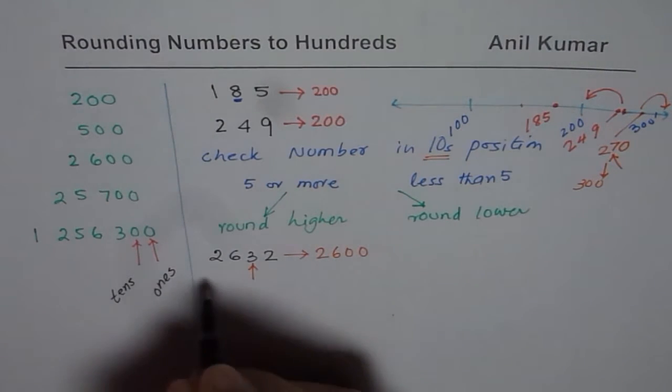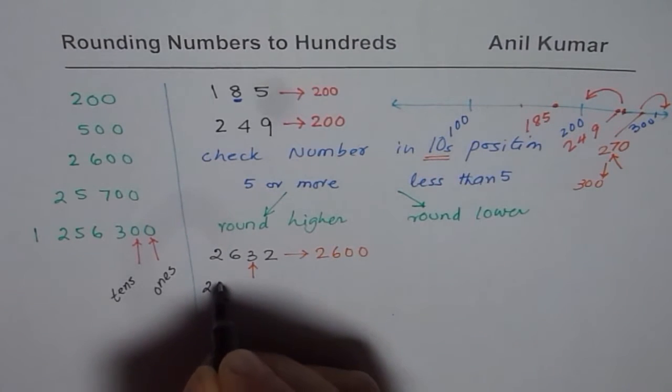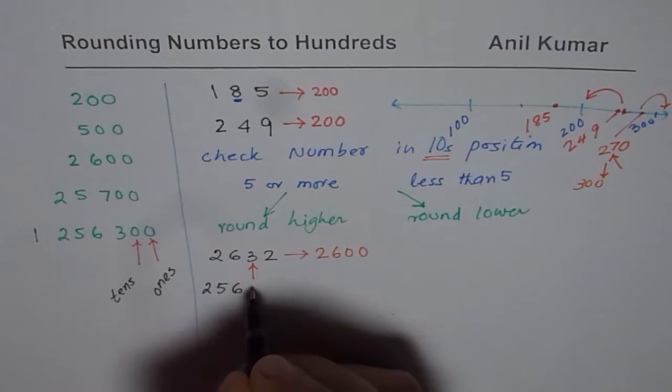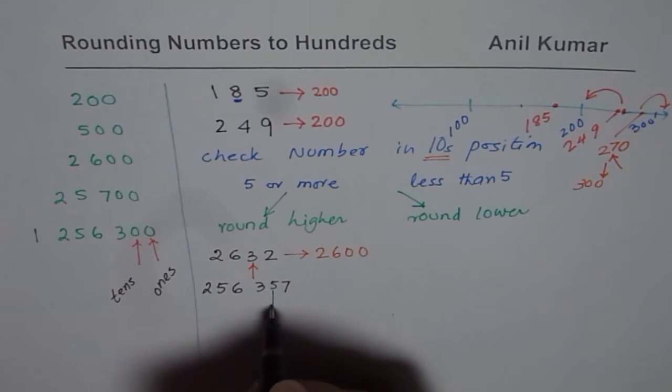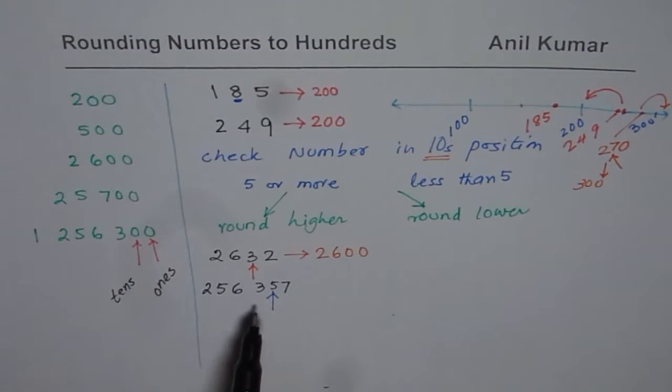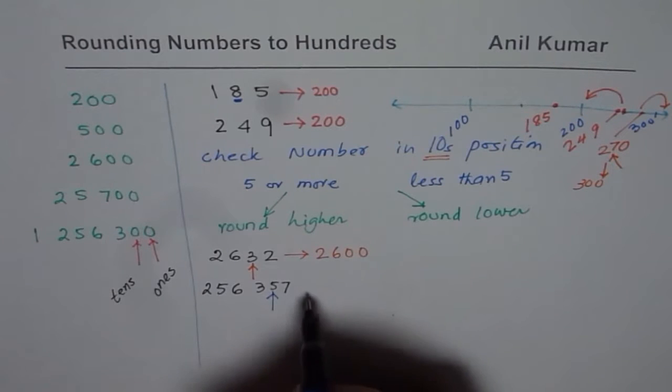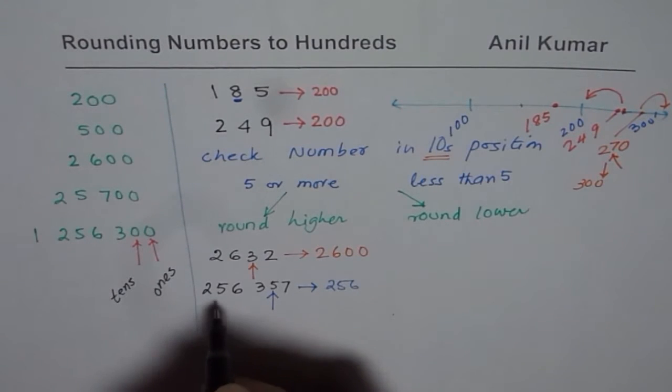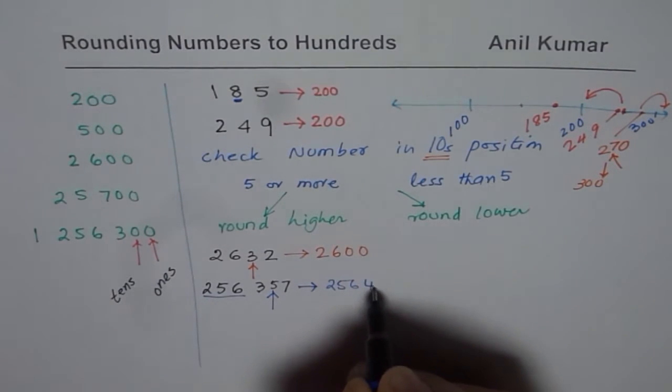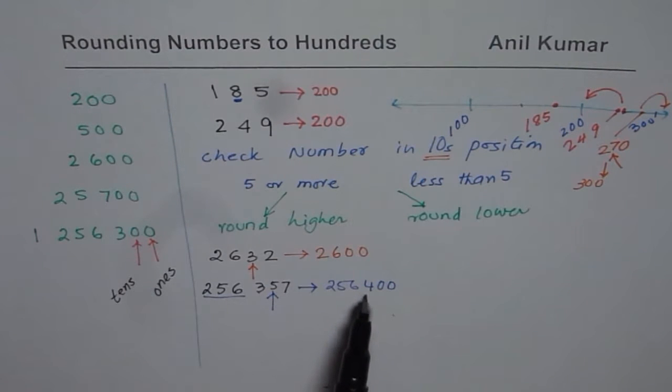If I have a number, let me write a bigger number still, 256,357. Now we have to round this number to nearest hundreds. The number on tens position is 5. So you have to only check the number in tens position. If it is 5 or more, you round higher. So that number becomes higher. So it becomes 256, all these remain same, but three changes to four and two zeros. Rounding to hundreds means you should always get some hundred. That means ones and tens positions should be zero. So that is how you should be rounding the numbers.